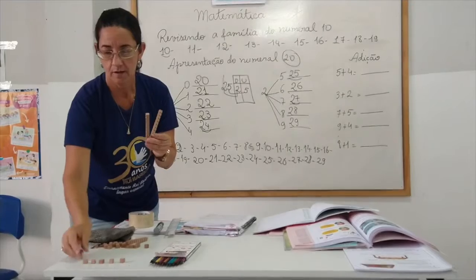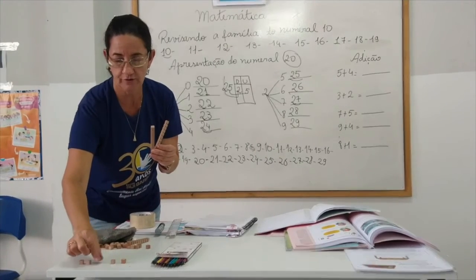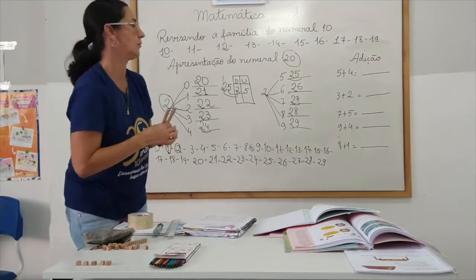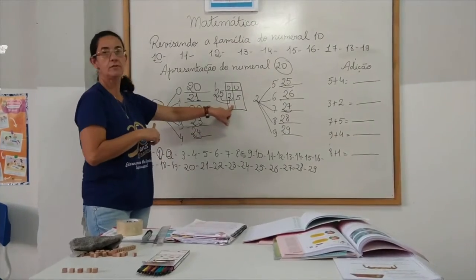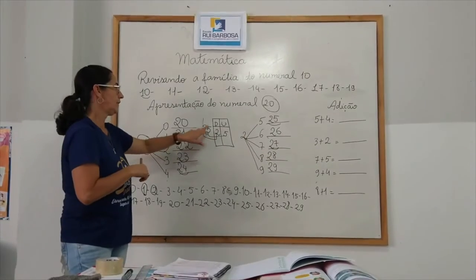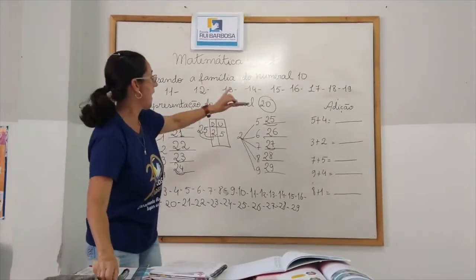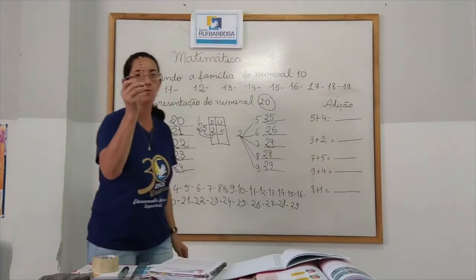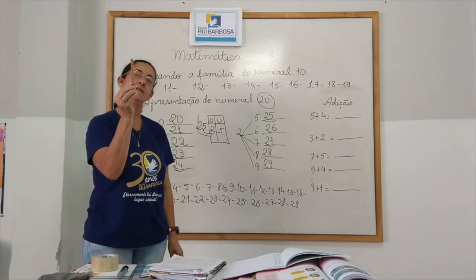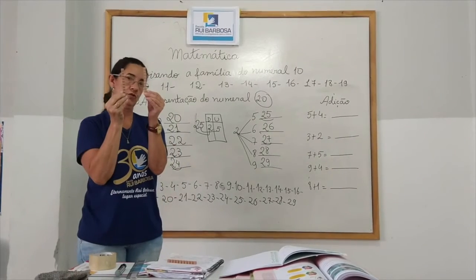20, mais 1. 21, 22, 23, 24, 25. E aqui eu tenho o número 25, certo? Então, 20 é igual a duas dezenas e 10 é igual a uma dezena. Ou seja, 10 é representado por uma tirinha e 20 com duas tirinhas.